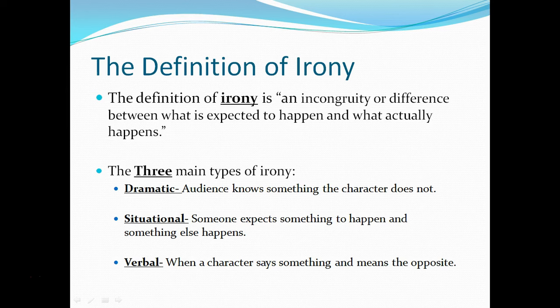The definition of irony is an incongruity or difference between what is expected to happen and what actually happens. There are three main types of irony: dramatic, which is when the audience knows something the character does not; situational, when someone expects something to happen and something else happens; and verbal, when a character says something and means the opposite. In all three types there is an incongruity between what we would normally expect to happen and what actually unfolds.